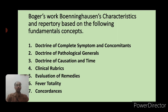Boenninghausen's Characteristics Repertory has seven fundamental concepts: first, the doctrine of complete symptom and concomitant; second, doctrine of pathological generals; third, doctrine of causes and time; fourth, clinical rubrics; fifth, evolution of remedies; sixth, fever totality; and seventh, concordance. Let us briefly go through all these seven fundamental concepts.